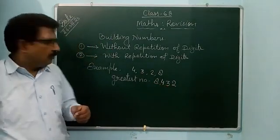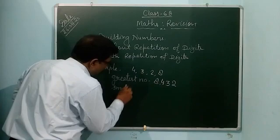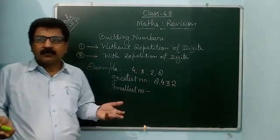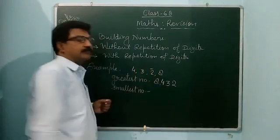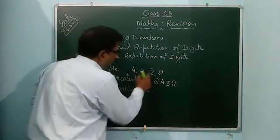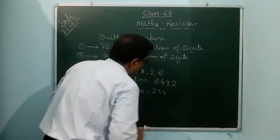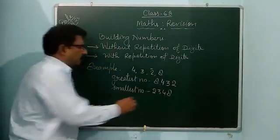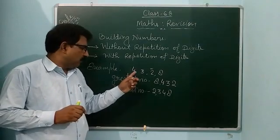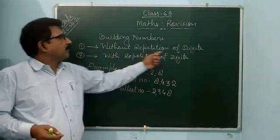So 8,432 is the greatest number using 4, 3, 2, and 8. Now you make the smallest number — the smallest four-digit number. You firstly choose the smallest digit, then just bigger, then just bigger, and at last the biggest number. So you write 2, then 3, then 4, and at last 8. So the smallest number is 2,348. By using 4, 3, 2, and 8, you can make the greatest and smallest four-digit number without repetition of digits.